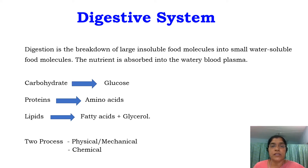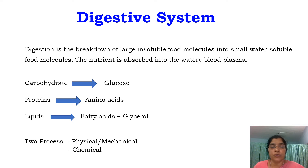During digestion, the food particles are converted into three main components: carbohydrate, proteins and lipids. Carbohydrate is converted into glucose, protein into amino acids, and lipid into fatty acids and glycerol.